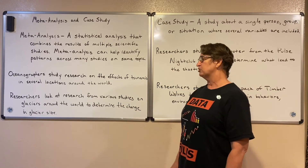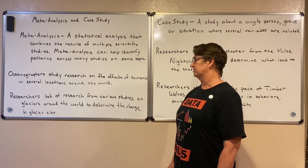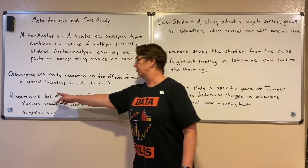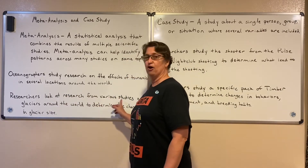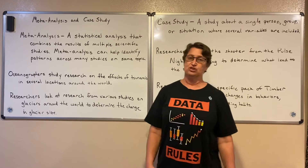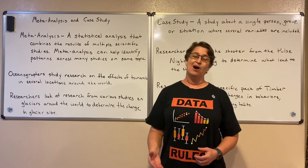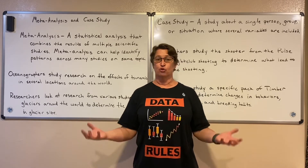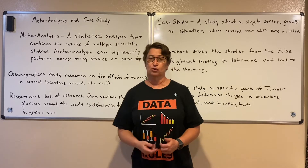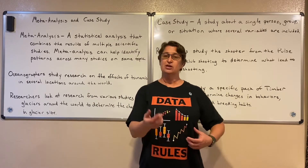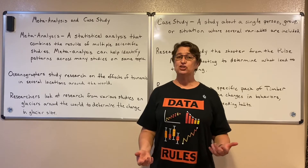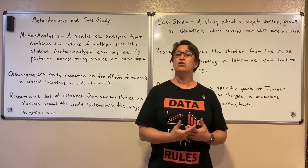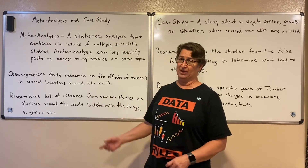Here's another example. Researchers look at research from various studies on glaciers around the world to determine the change in glacier size. They're looking at the research from other studies to help them determine those changes and see patterns on glaciers. Right now there is coronavirus research occurring all over the world. There are all kinds of different studies on what kinds of medication might help patients, and people who look at all those different studies to see patterns are doing a meta-analysis.